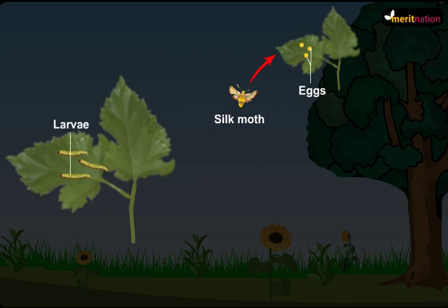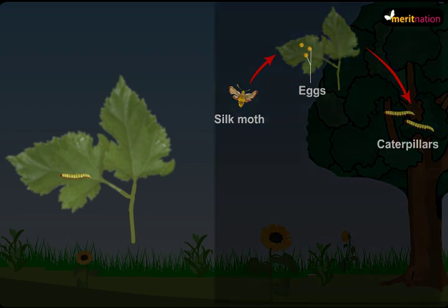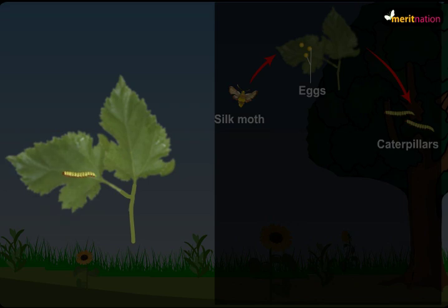Now what are these larvae known as? Any guesses? These larvae are known as caterpillars or silkworms. Slowly, these caterpillars grow in size by feeding only on the mulberry leaves.